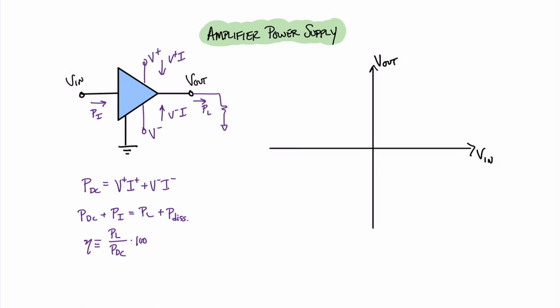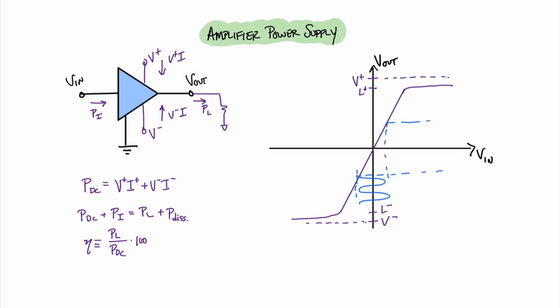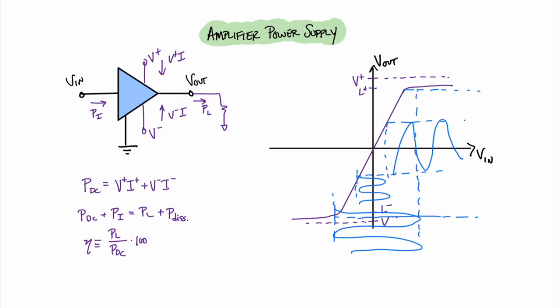These power equations are not the full story. We also have to consider the limitations the amplifier has due to the positive and negative power rails. Returning to the voltage transfer curve, we find there is a maximum input capability just below our voltage rails, with two points on the curve called L plus and L minus. This means there is a limitation on the size of the input signal before the output gets cut off or clipped. If a signal coming in is too large, part of the output gets clipped off.